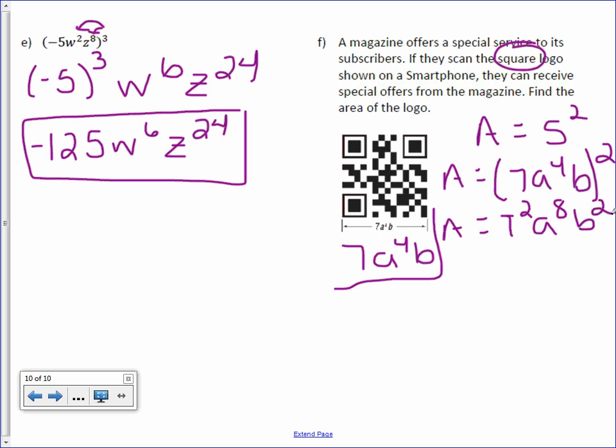7 squared we know is 49. So 49a to the 8th b squared square units.